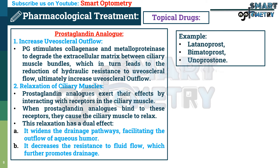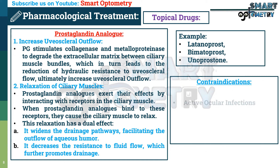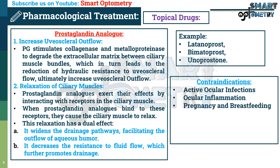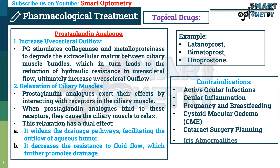These are examples of prostaglandin analogs. Contraindications of prostaglandin analogs include active ocular infections, ocular inflammation, pregnancy and breastfeeding, cystoid macular edema, planned cataract surgery, and iris abnormalities.